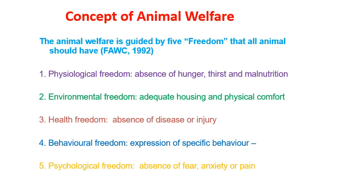The concept of animal welfare is guided by the five freedoms recommended by the Farm Animal Welfare Conference in 1992. First, physiological freedom — absence of hunger, thirst, and malnutrition. Second, environmental freedom — adequate housing and physical comfort, protected from environmental conditions. Third, health freedom — absence of disease or injury, with proper medical support or treatment. Fourth, behavioral freedom — the ability to express species-specific behaviors, including freedom to move and walk. Fifth, psychological freedom — freedom from fear, anxiety, or pain. Only when all five freedoms are fulfilled can we say animal welfare is properly addressed.